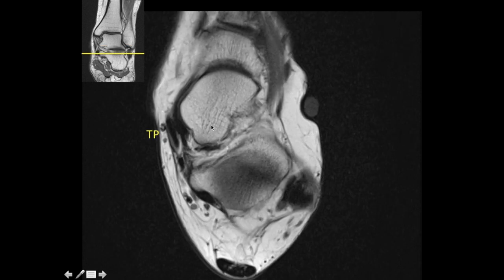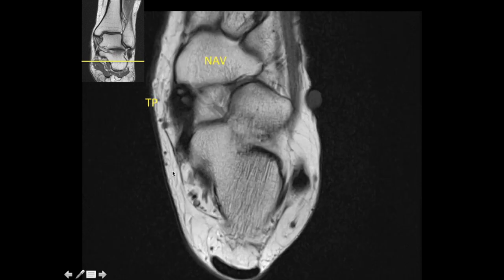The tibialis posterior tendon has a wide attachment to the navicular bone, and the two osseous structures within the tibialis posterior tendon are the accessory navicular bones.